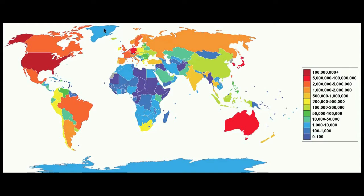The ice blue land of Greenland has fewer hosts than the green land of Iceland. The Americas, Europe, Russia, and Australia all have many internet hosts. The Middle East and Africa, not so much.